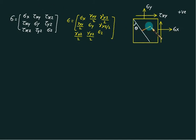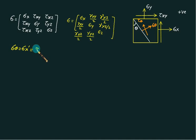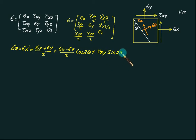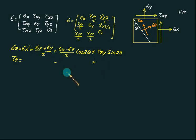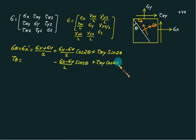On any inclined plane we can calculate: sigma_theta = (sigma_x + sigma_y)/2 + (sigma_x − sigma_y)/2 · cos(2θ) + tau_xy · sin(2θ). Similarly, the shear stress on the inclined plane is tau_theta = −(sigma_x − sigma_y)/2 · sin(2θ) + tau_xy · cos(2θ).